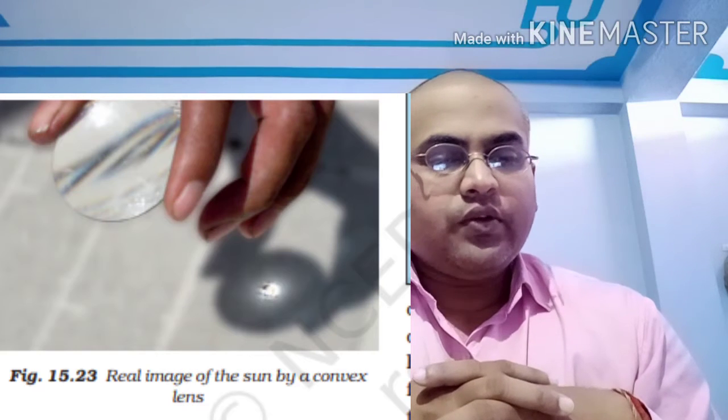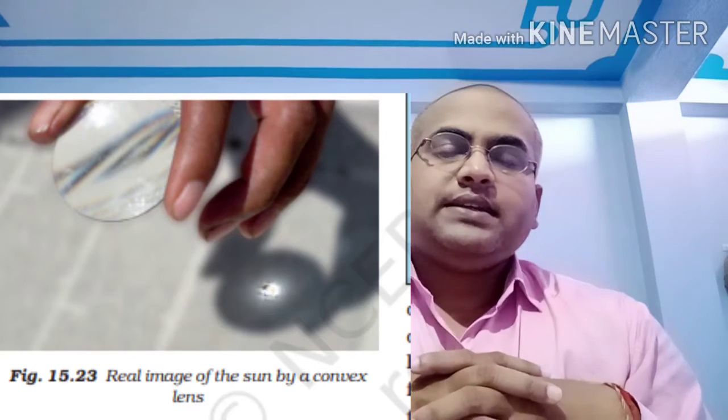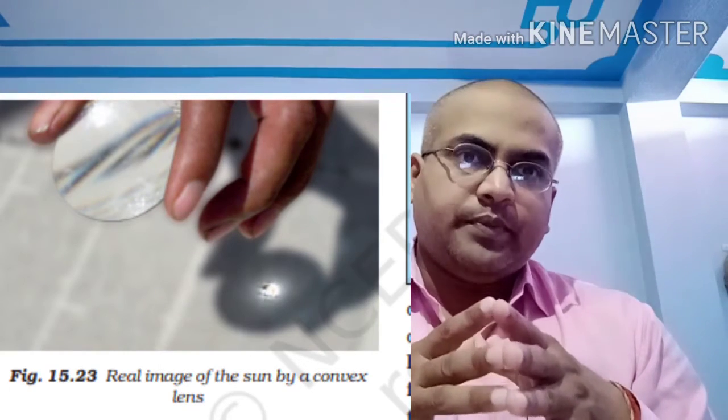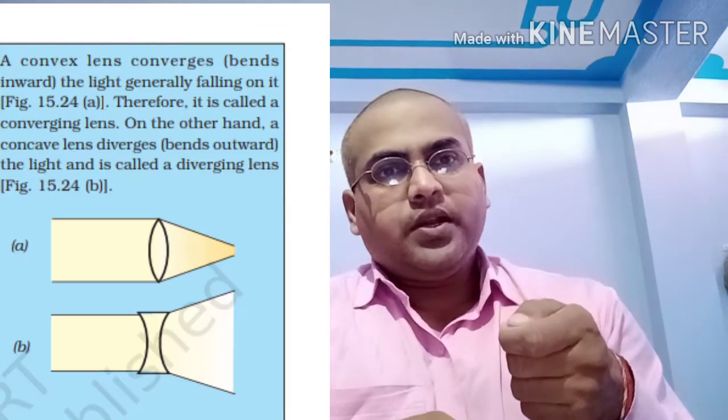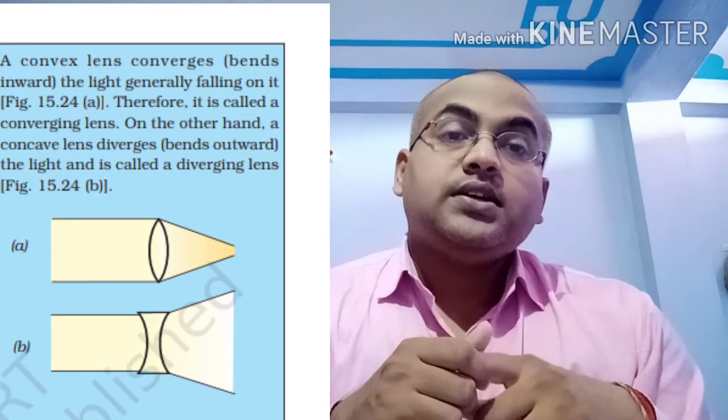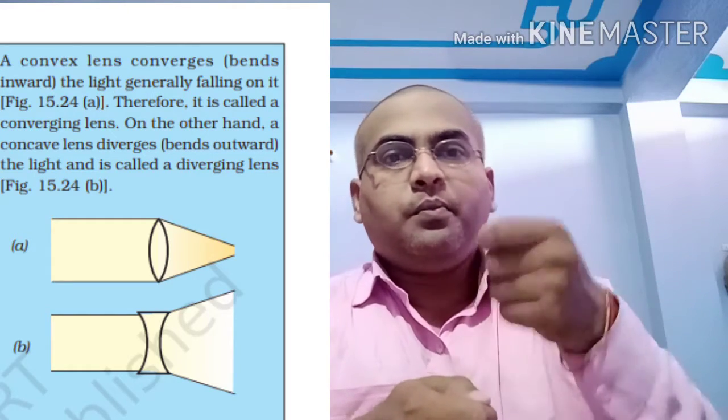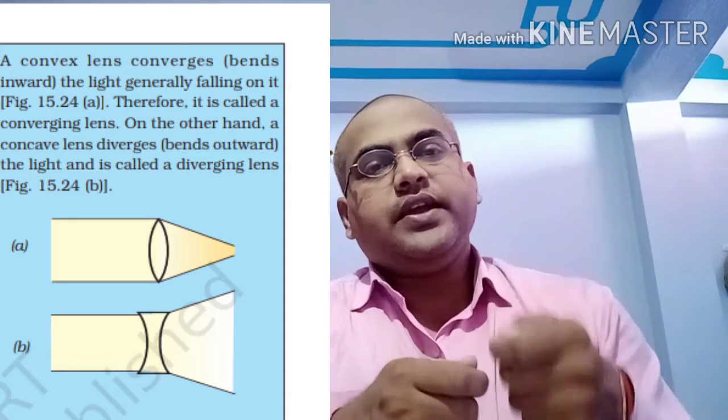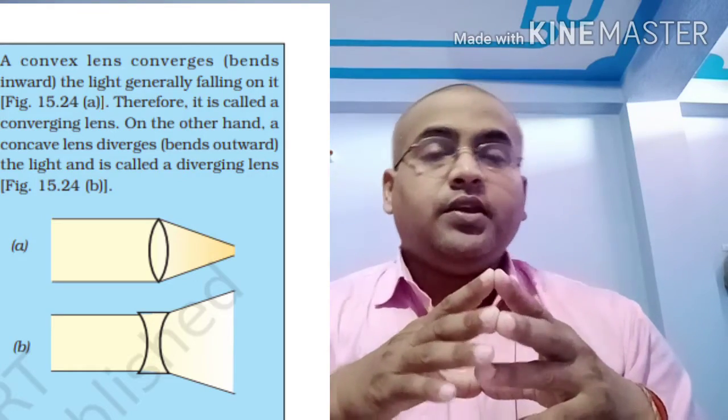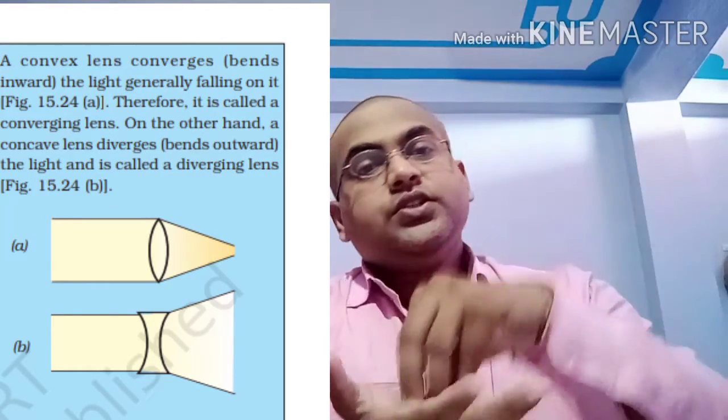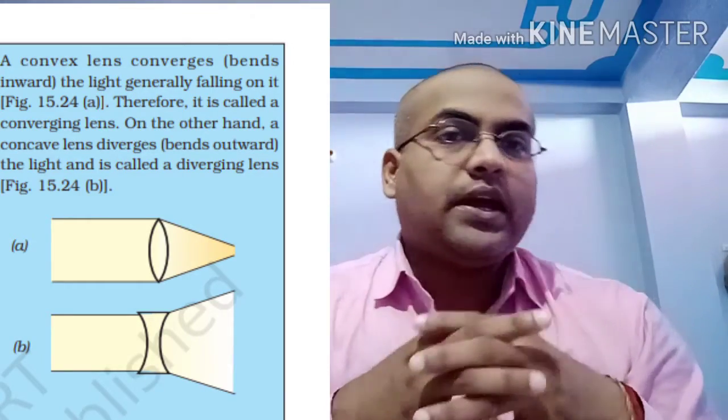So here, we are going to take a convex lens or magnifying lens from your geometry box. And we have to go to the sunlight with a paper. And by the help of this magnifying glass on the paper, we try to observe the image of the sun. We maintain the distance of the lens with the paper. And we will find that after some time, an image will get on the paper by the help of this magnifying glass.